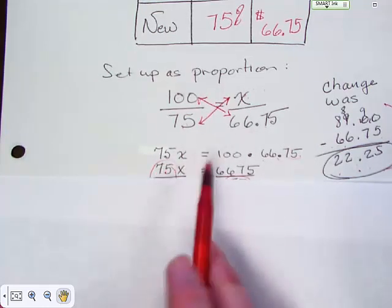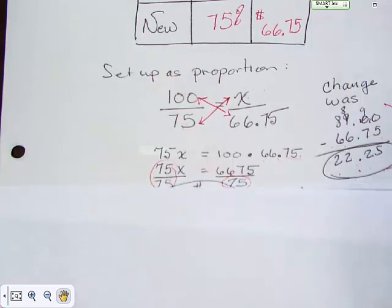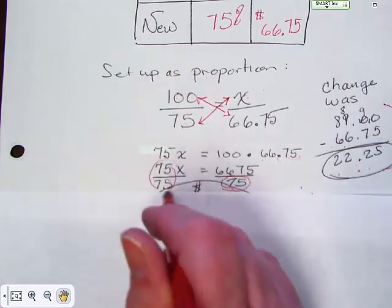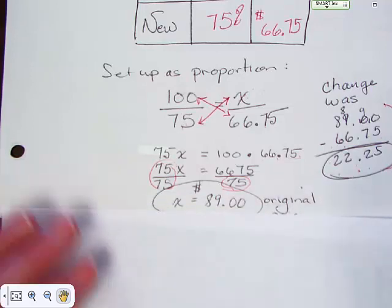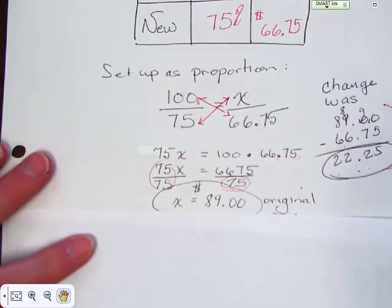And then we have to divide it by seventy five so we can get that X by itself. Right here. And so X equals eighty nine dollars. And now I can tell you about the twenty two twenty five, because that eighty nine dollars was the original price.